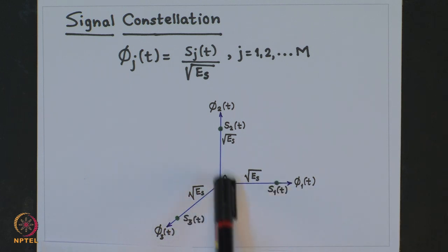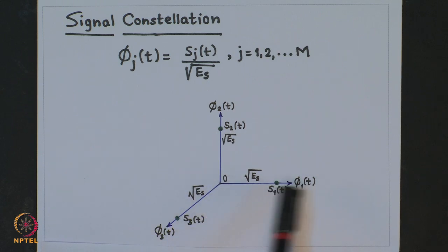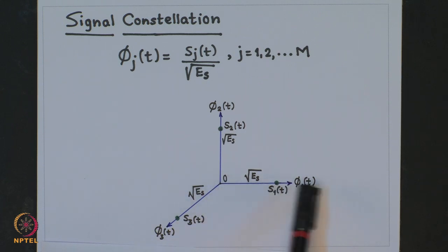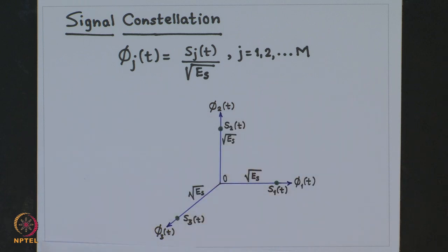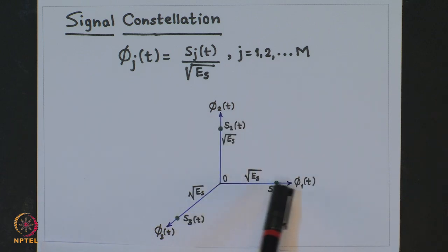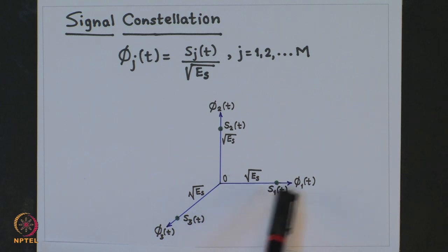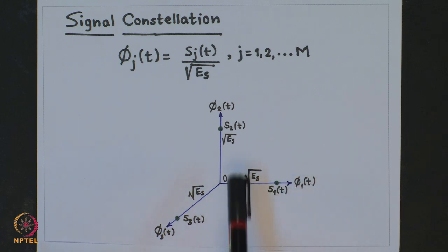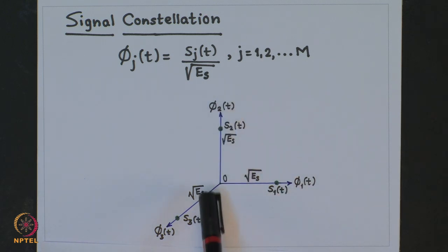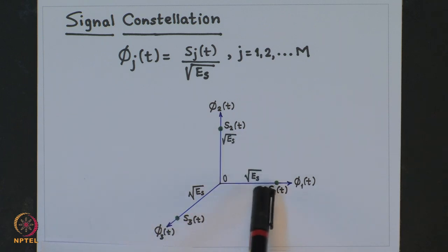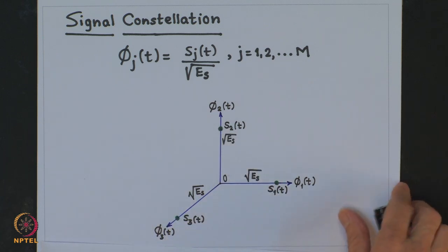We have 3 signals S_1(t), S_2(t), and S_3(t), and the orthonormal basis signals are shown here. The projections of S_1(t) on φ_1(t), S_2(t) on φ_2(t), and S_3(t) on φ_3(t) are all equal and equal to √E_s.